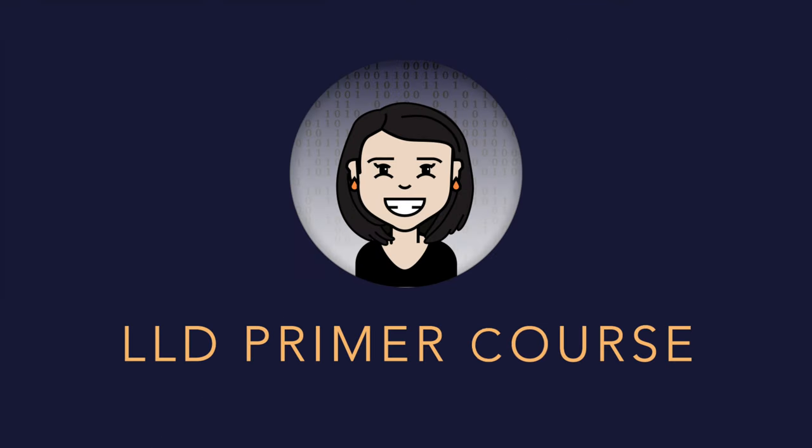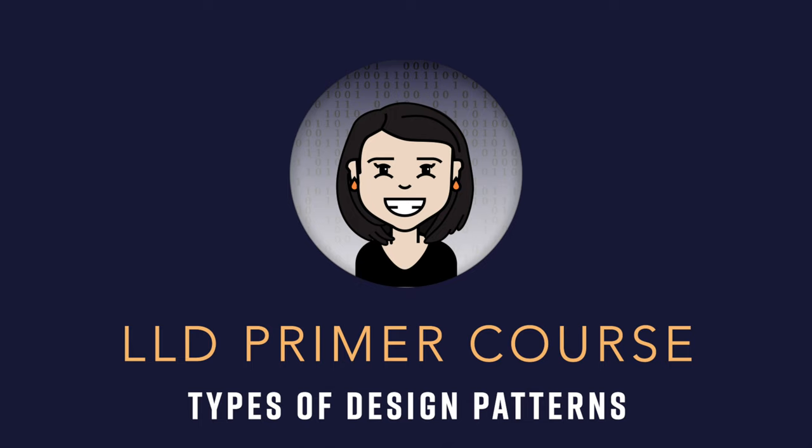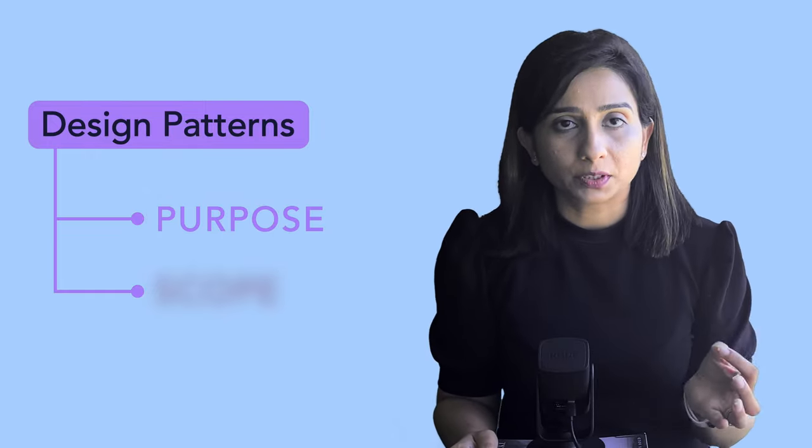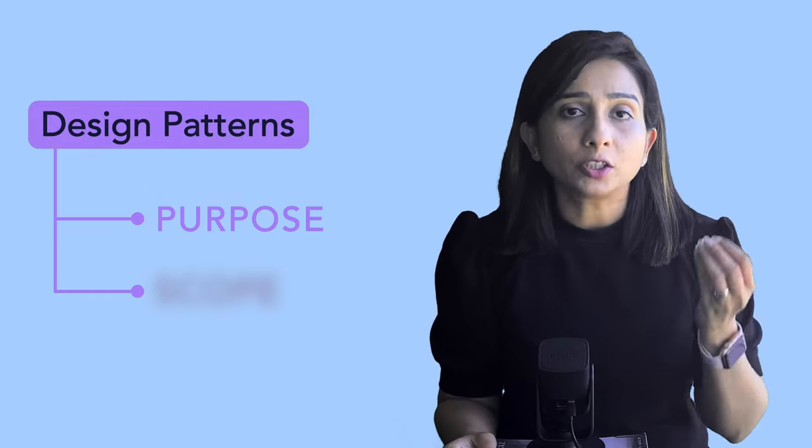Let's talk about the organization and different types of design patterns. Since design patterns solve the problem of how you are going to organize your classes and objects, their behavior, and their communication with each other, we can break design patterns into those categories. The first criteria on which we divide different design patterns is the purpose — what is the purpose any design pattern solves? There can be three purposes that any design pattern would be solving.